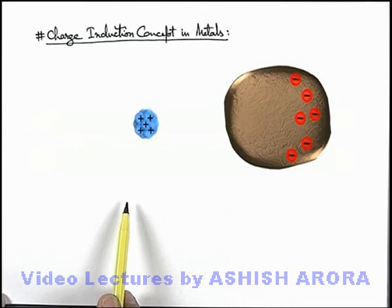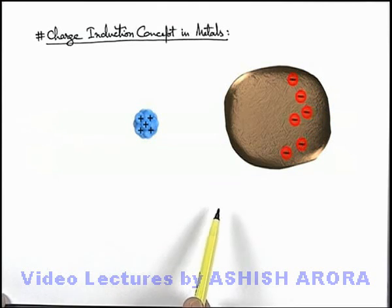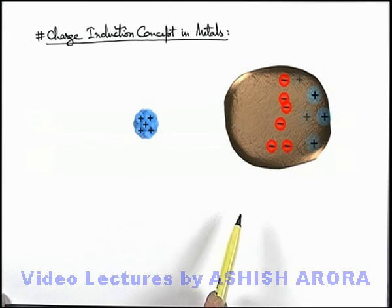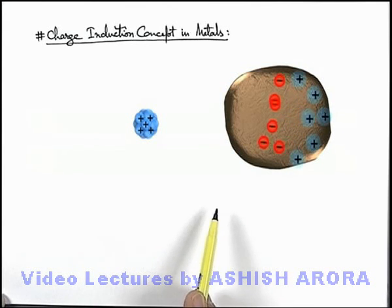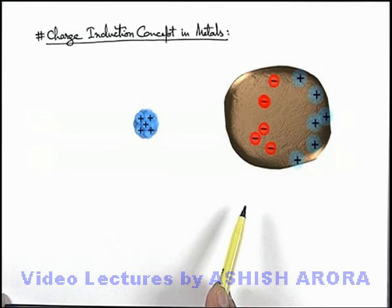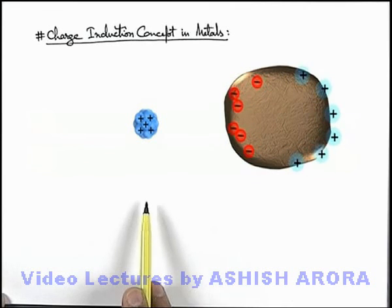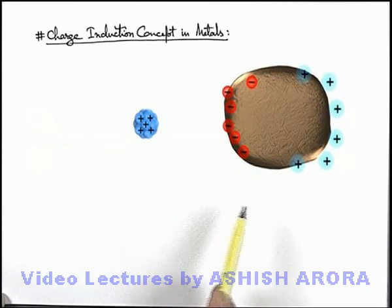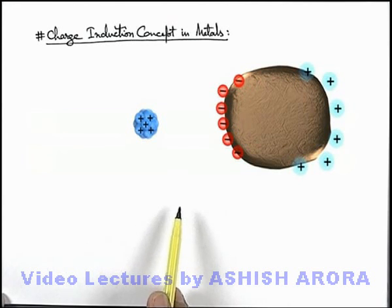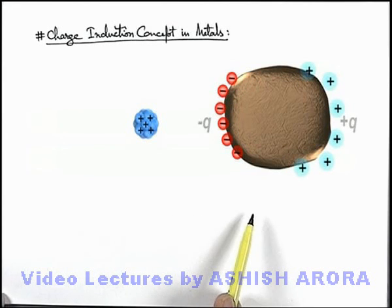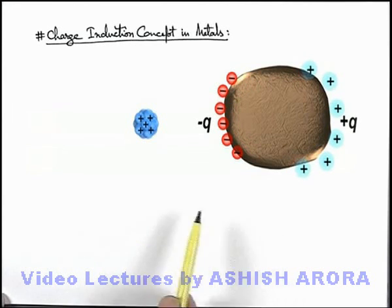This positively charged body will attract the free electrons of this metal. So the free electrons of the metal will start migrating from the surface far away from the charged body to the surface which is closer to the body. Because it is positive, it will attract the electrons — electrons will start moving from the rear surface to the front surface, because of which on the rear surface positive charges will appear and on the front surface negative charges will appear.